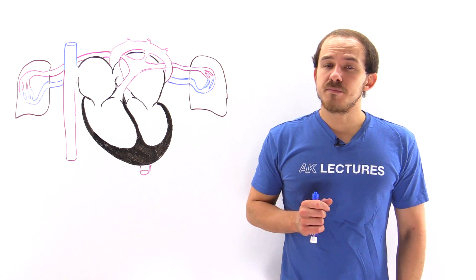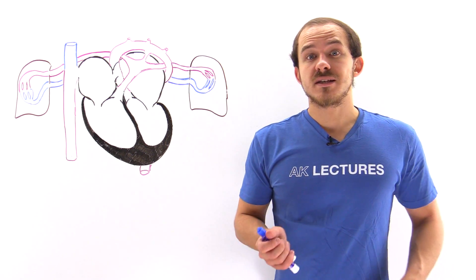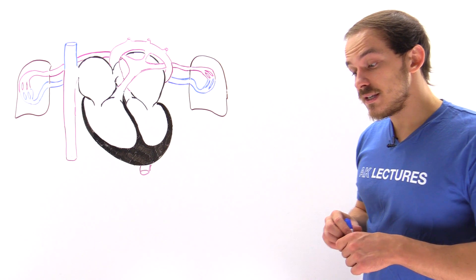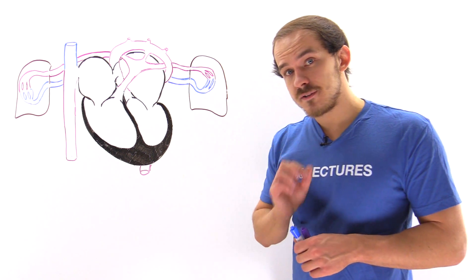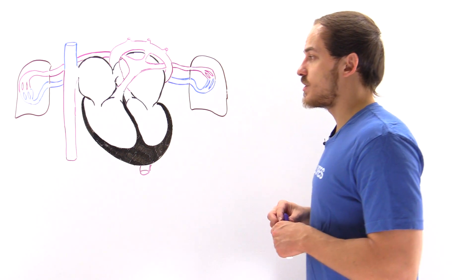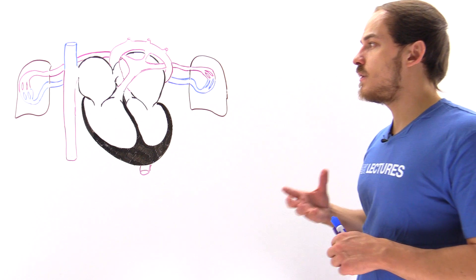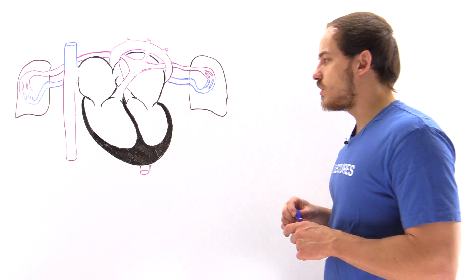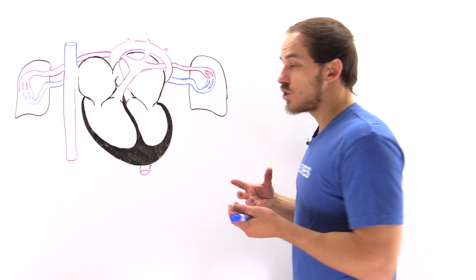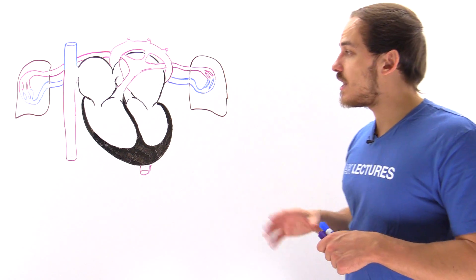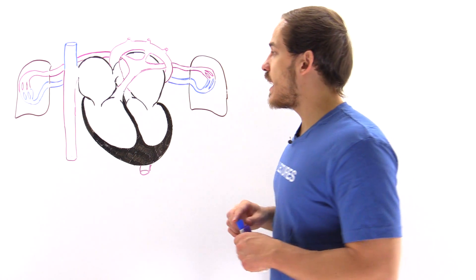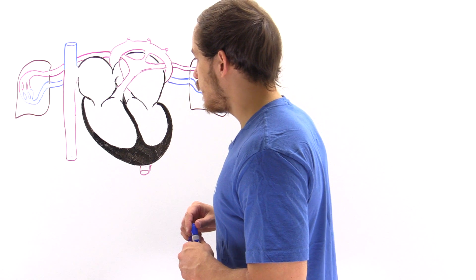As we know, the way that blood moves inside the circulatory system of the developing fetus is quite different than the way that blood moves inside the circulatory system of the fully functional adult individual. In this lecture, we're going to focus on the way that blood moves inside the heart of that developing fetus.